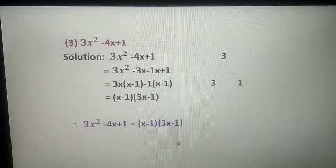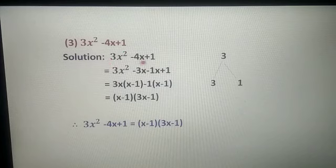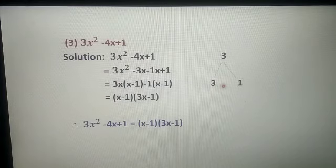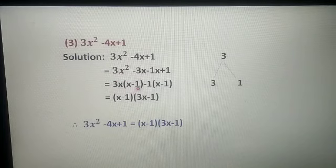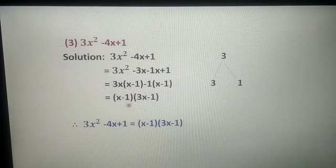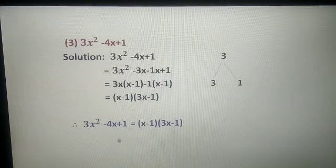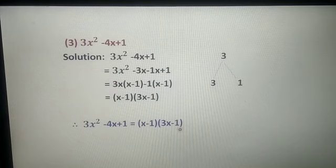Question 13, third sum: 3x² - 4x + 1. Coefficient of x² is 3, constant is 1, so 3 × 1 = 3. Factors of 3 giving middle term -4 are -3 and -1. So: 3x² - 3x - x + 1. Taking 3x common gives (x - 1), and taking -1 common also gives (x - 1). Final answer: 3x² - 4x + 1 = (x - 1)(3x - 1).